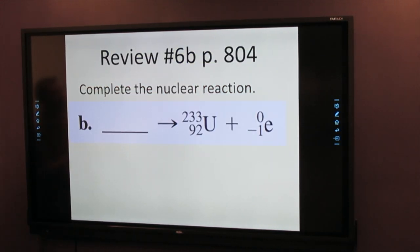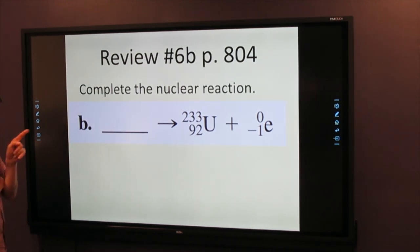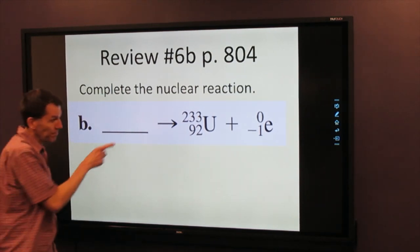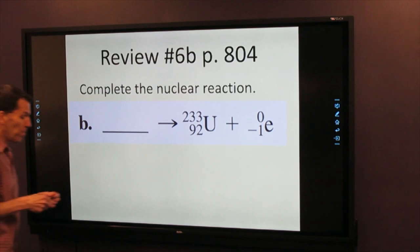Here's a quick review from part one. This is problem 6B on page 804. It's complete this nuclear reaction. Add the nucleic that's on the reactant side of this process. And if you look at the right side, you should hopefully recognize that this is beta decay because there's the electron right there on the far right. And so it's beta decay.